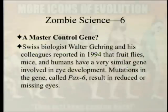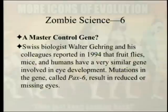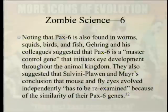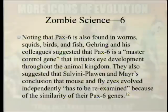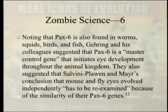A master control gene? In 1994, Swiss biologist Walter Gehring and colleagues reported that fruit flies, mice, and humans share a very similar gene involved in eye development. Mutations in the gene called Pax-6 result in reduced or missing eyes. Noting that Pax-6 is also found in worms, squids, birds, and fish, Gehring suggested it is a master control gene initiating eye development throughout the animal kingdom. They also suggested that Salvini-Plawen and Mayr's conclusion that mouse and fly eyes evolved independently needed to be re-examined because of the similarity of their Pax-6 genes.